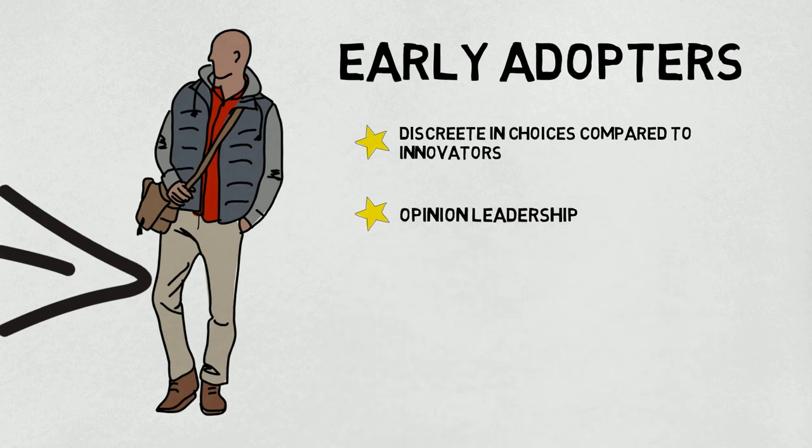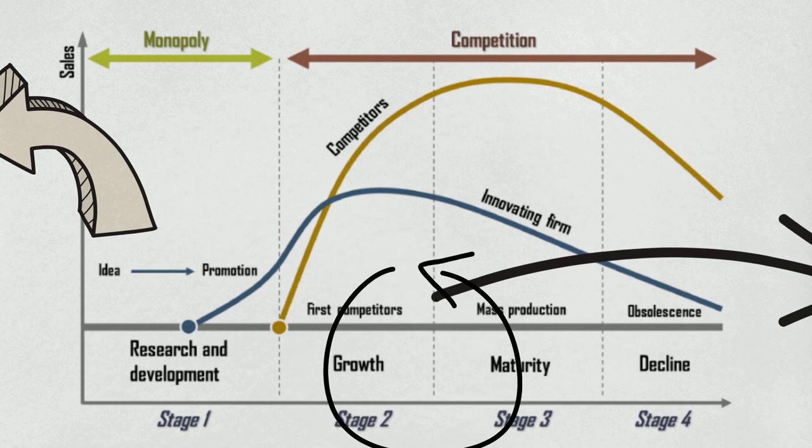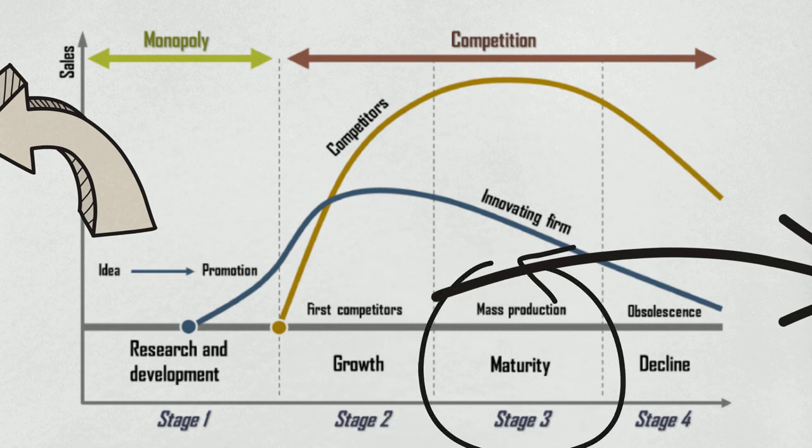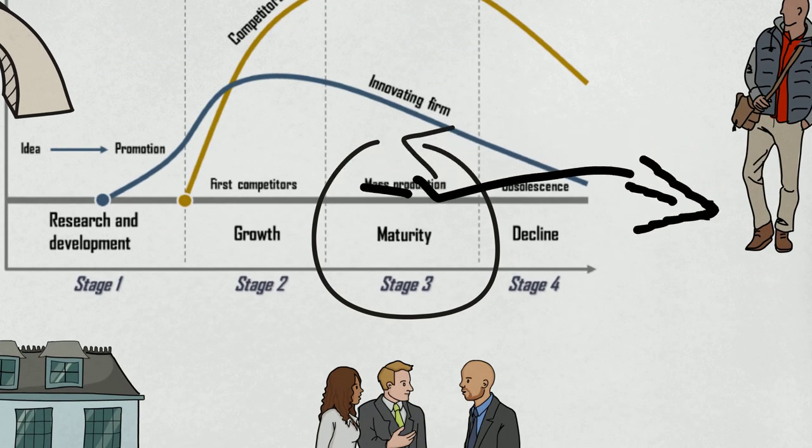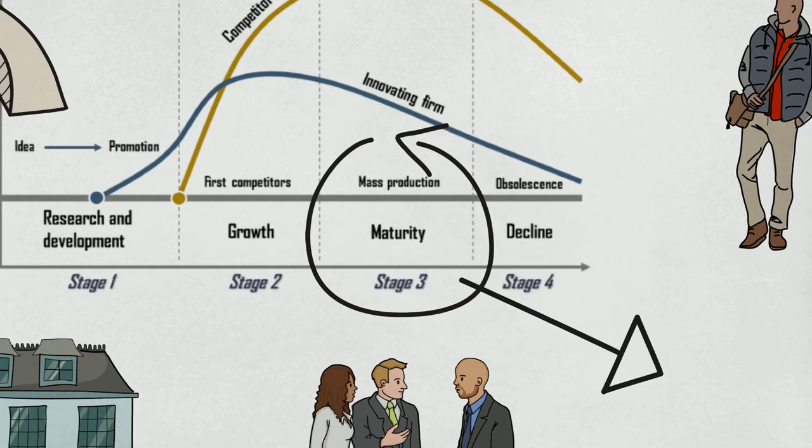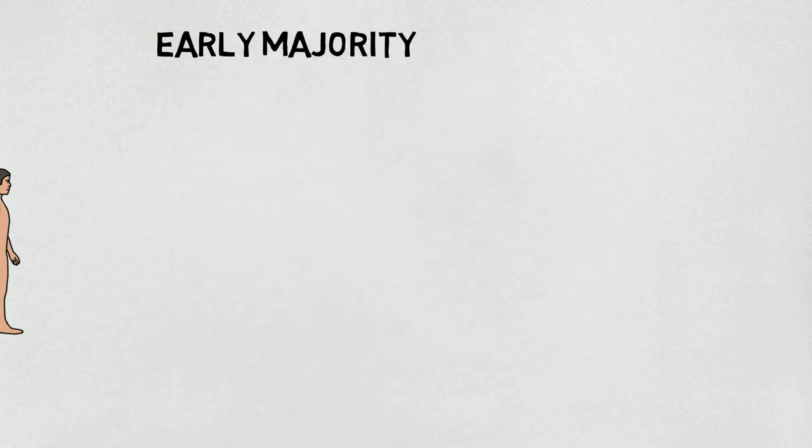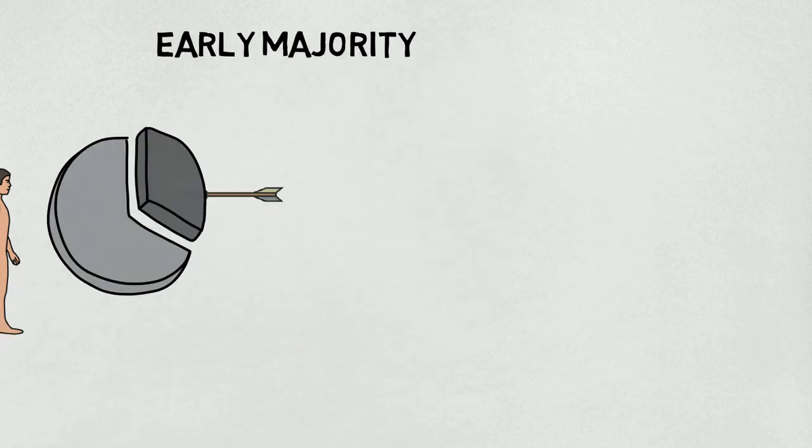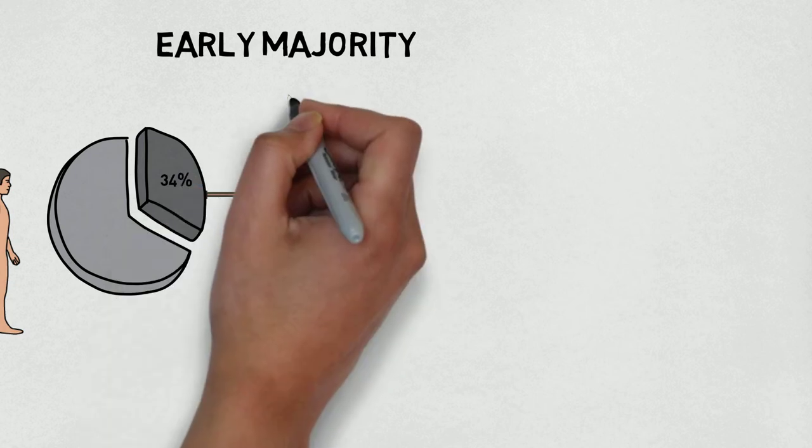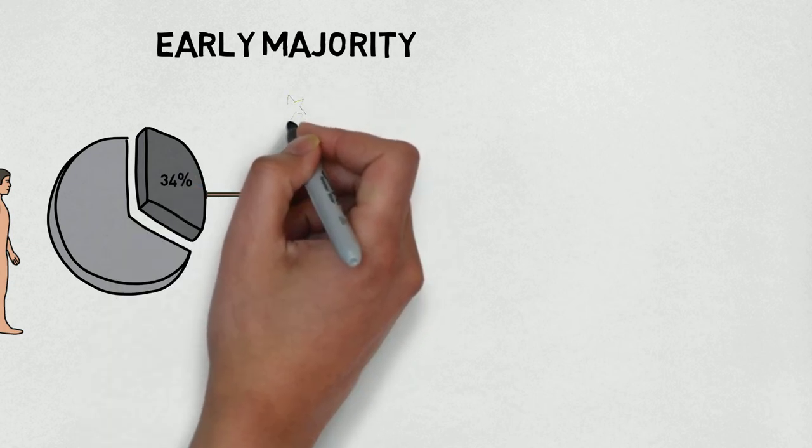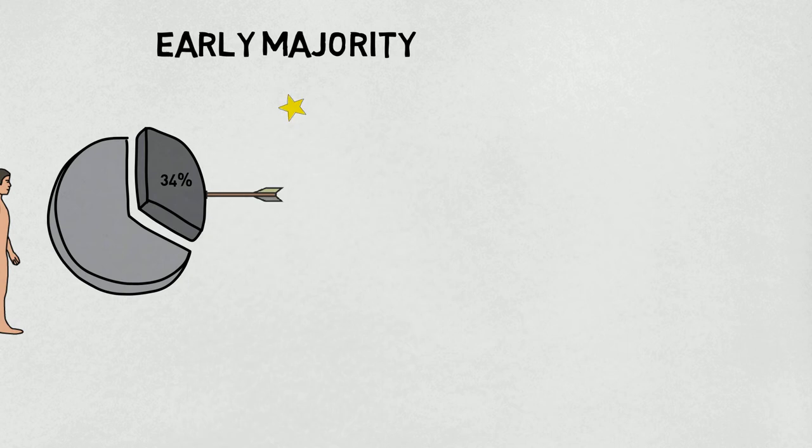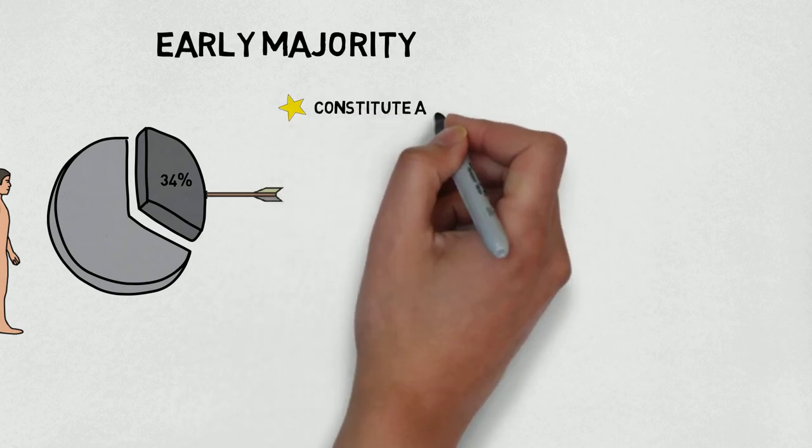We are going to move ahead and describe the early majority stage, which transmutes during the growth stage of the product life cycle. Remember, this category is intended to constitute roughly 34% of this category, making it one of the most important focus for sales and growth. This group adopt an innovation after a varying degree of time that is significantly longer than the innovators and early adopters.